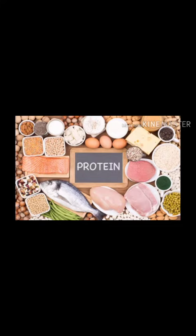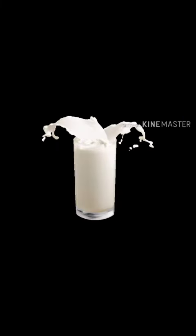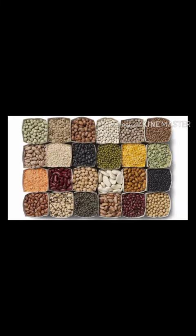Third comes proteins, or body-building food. Proteins help our body to grow and repair worn-out tissues. Different food items contain different types of proteins. Foods like milk, cheese, pulses, nuts, and eggs are some of the main sources of proteins.